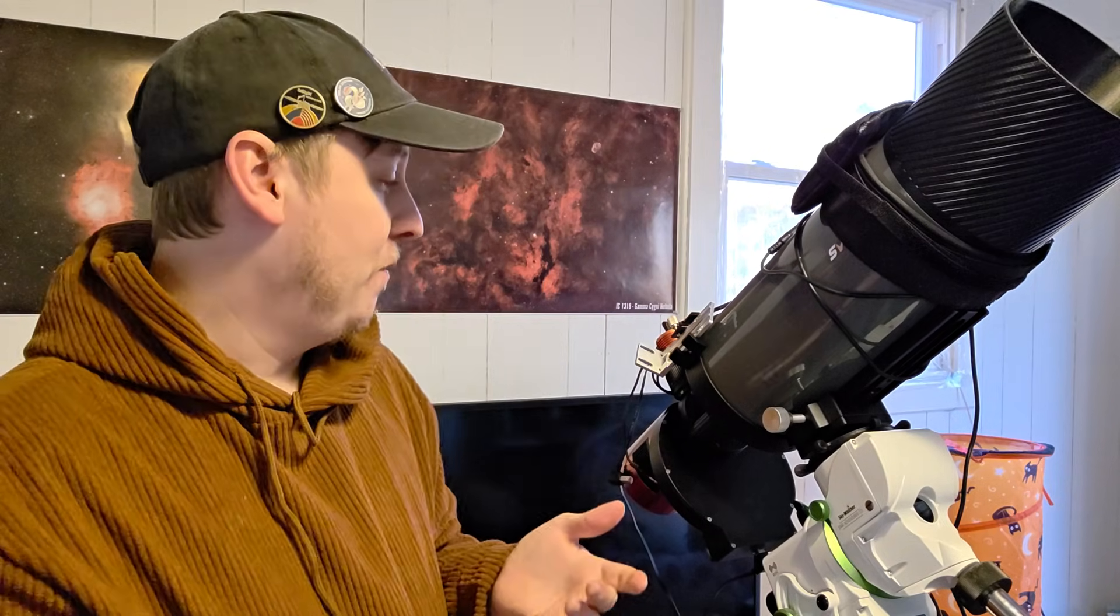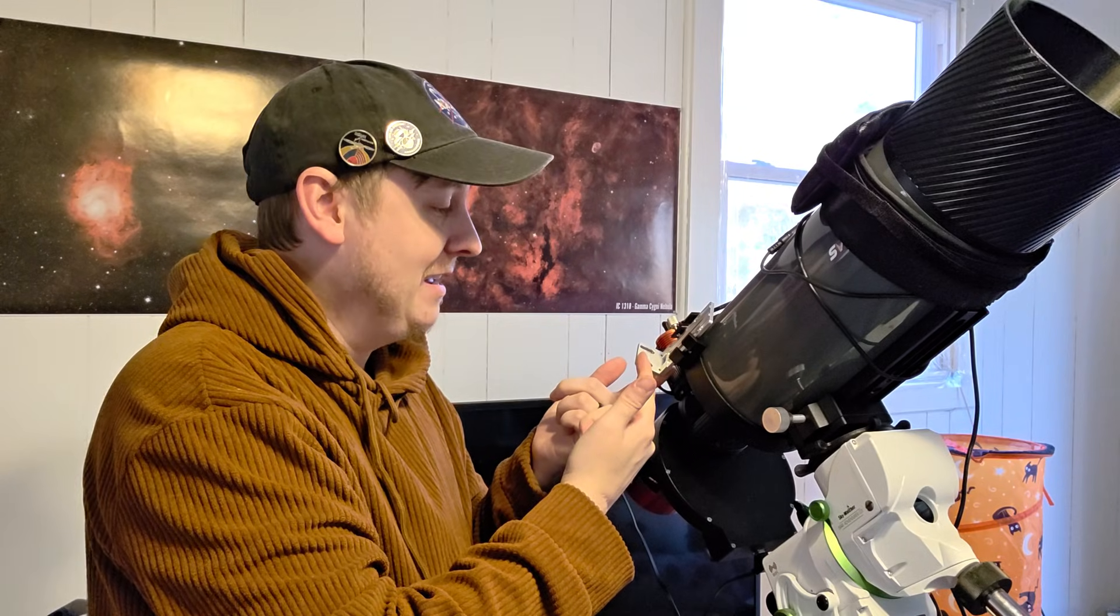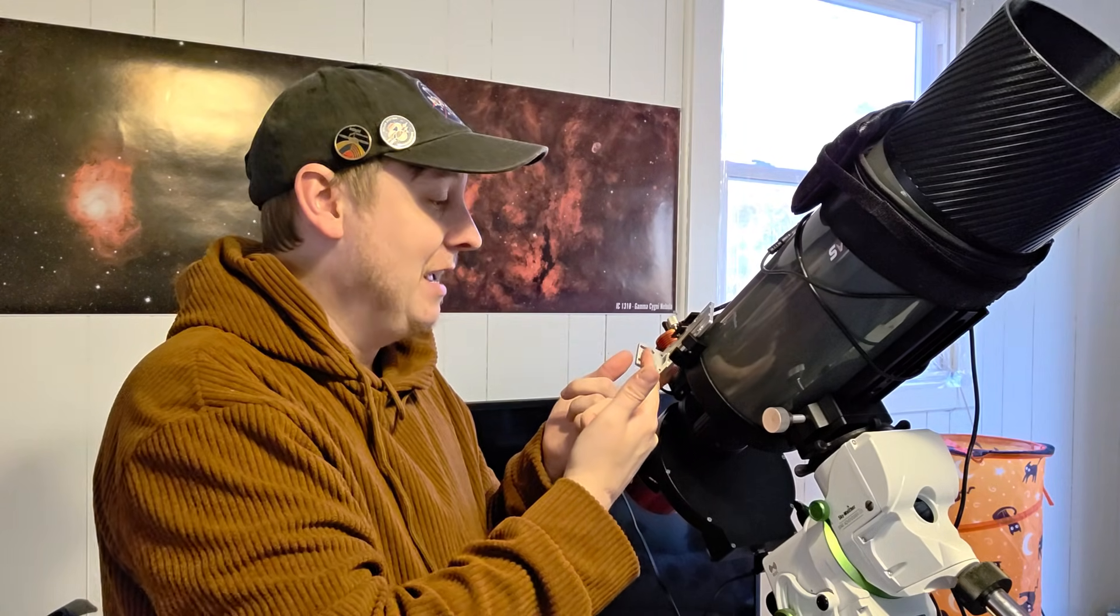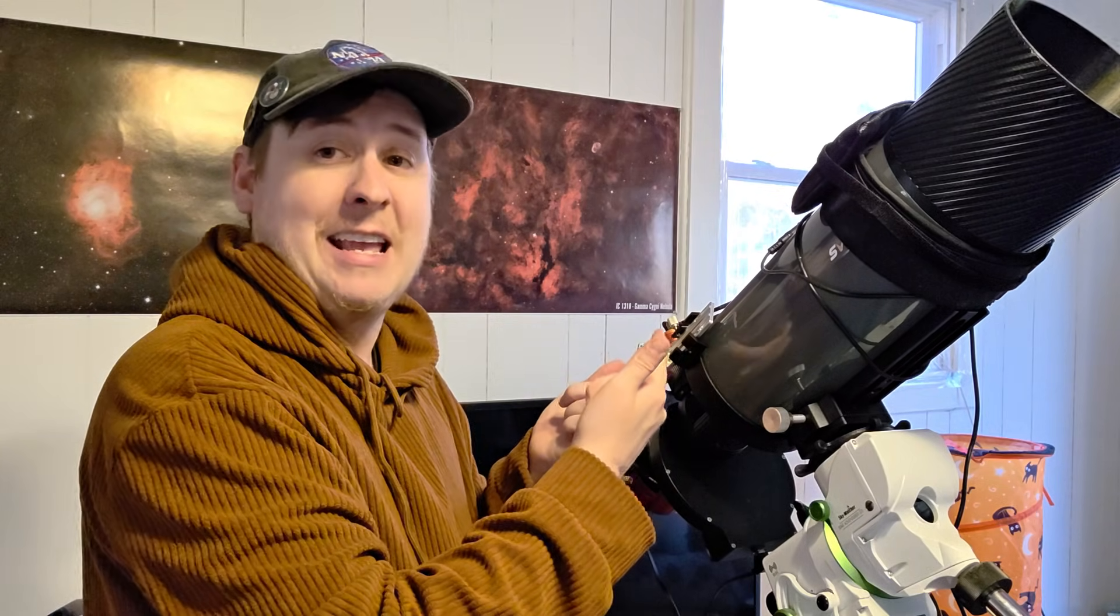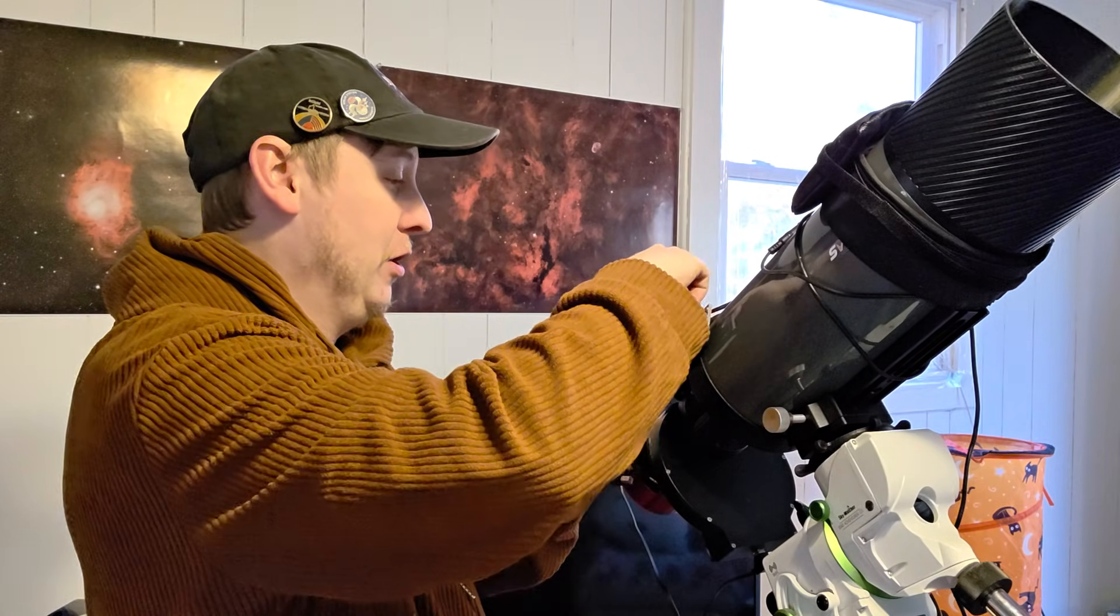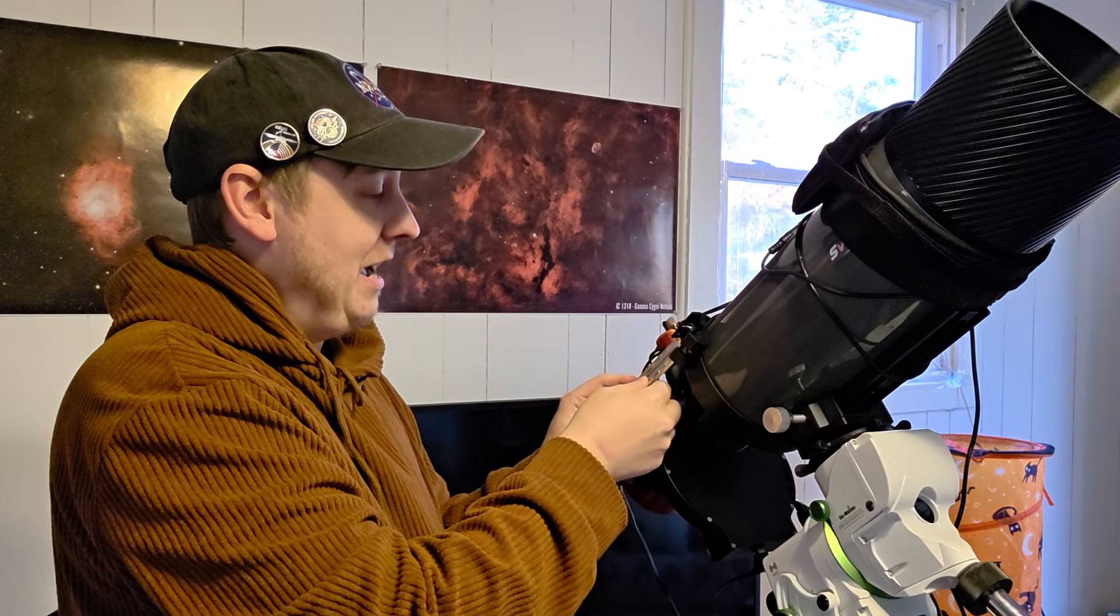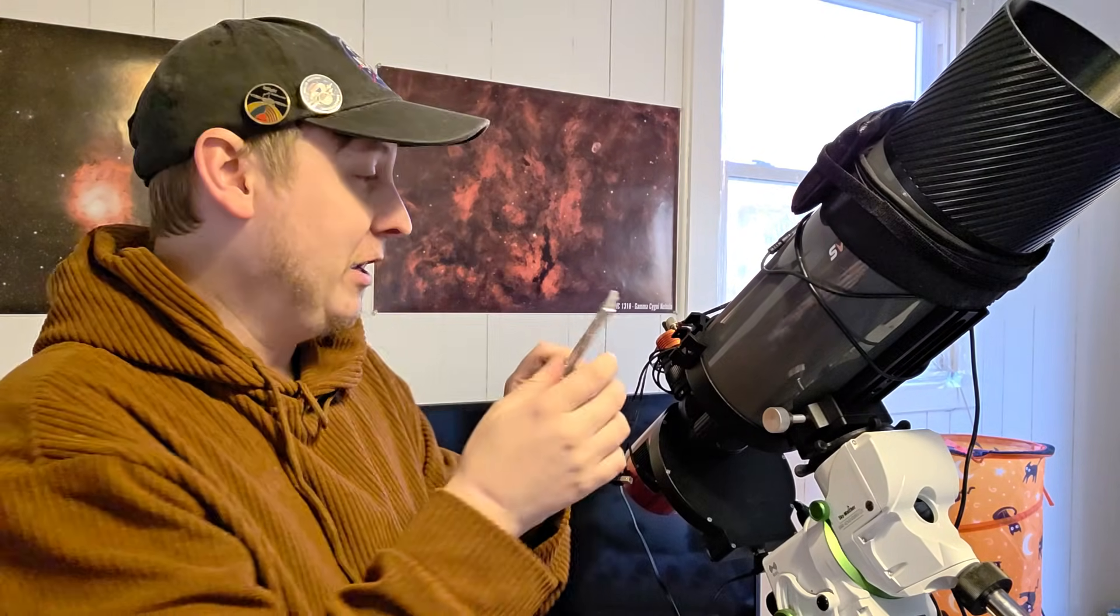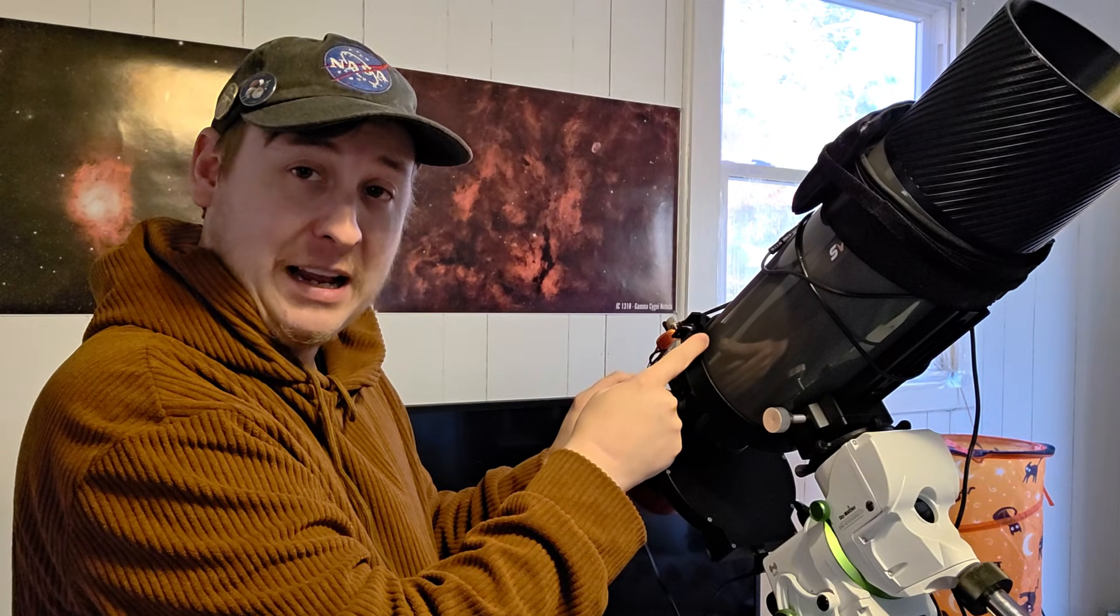But the problem is you have this bracket in the way that is sticking up. That's going to be a problem because that's going to get in the way of the spindle portion of where the motor is on the EAF. So we need to take this and flip it around. So instead of it facing this way, it will face the opposite way. But if you try and just flip this whole bracket over, it will not fit in the finder scope bracket on here. It only fits this way.